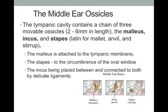We are continuing with our lecture on the middle ear anatomy and function. The middle ear includes three small bones that we call ossicles, namely the malleus, the incus, and the stapes. The malleus is attached to the tympanic membrane on the lateral wall of the middle ear cavity, while the stapes is attached to the oval window on the side of the inner ear. The incus attaches the malleus to the stapes.